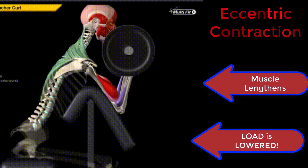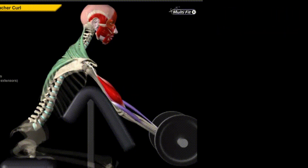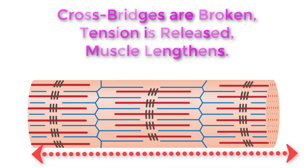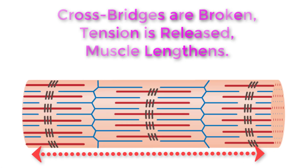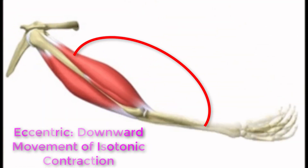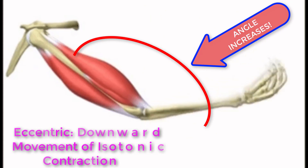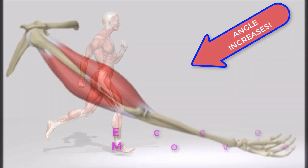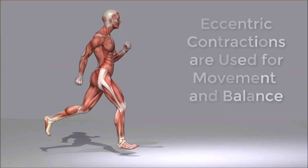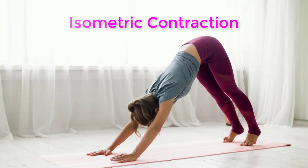An eccentric contraction occurs as muscle tension diminishes and the muscle lengthens. In this case, the hand weight is lowered in a slow and controlled manner as the number of cross bridges activated by nervous system stimuli decreases. As tension is released from the biceps brachii, the angle of the elbow increases. Eccentric contractions are also used for movement and balance of the body.